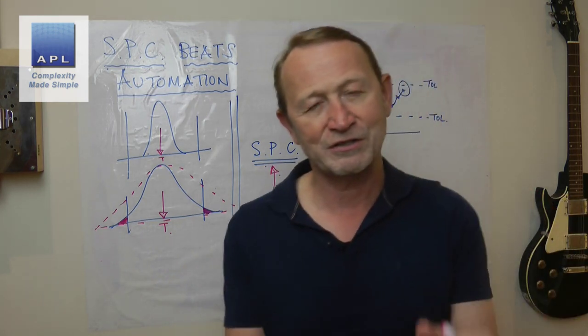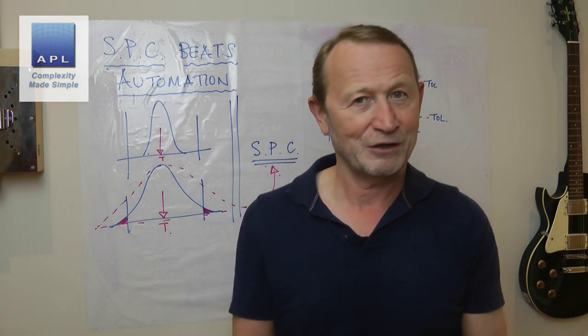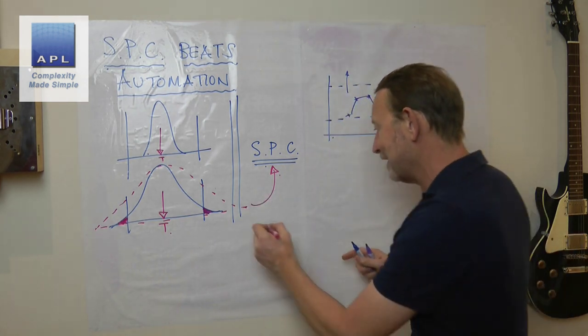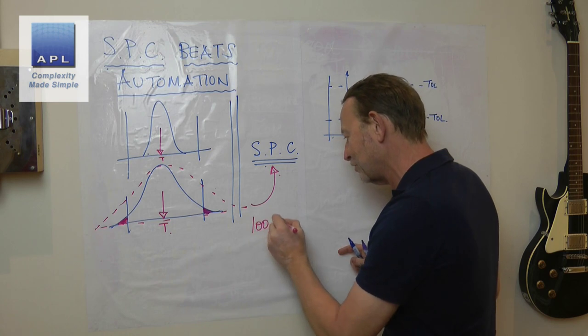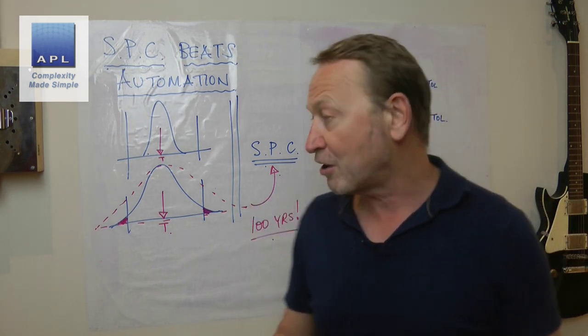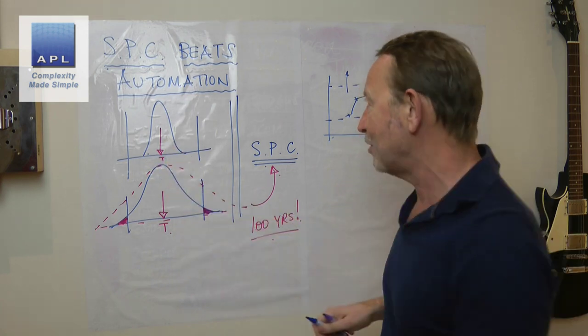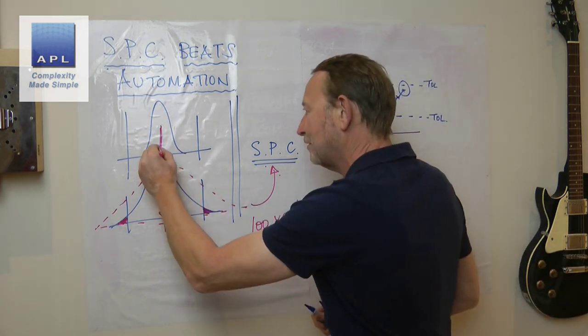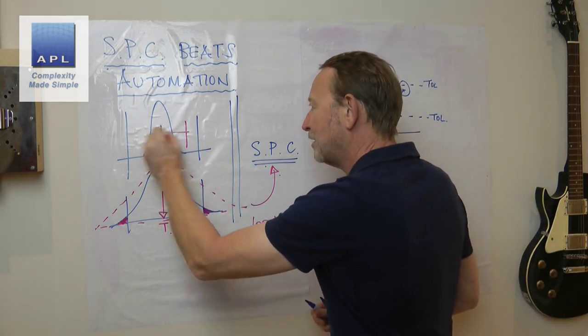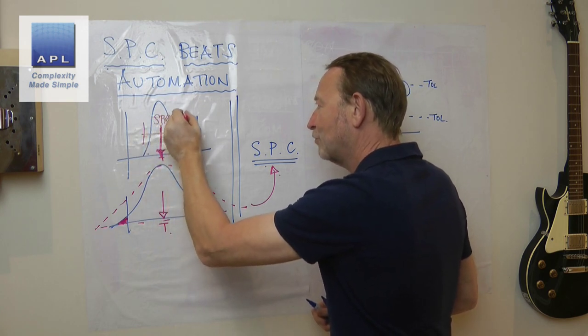You use a statistical process control chart. This has been known. It's knowledge that's been around for a hundred years. What this technique recognizes is the physics of your process. It understands the middle of your results.